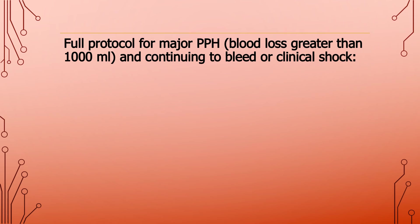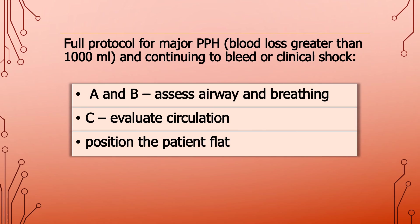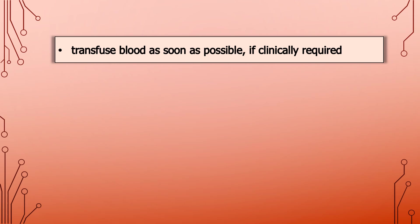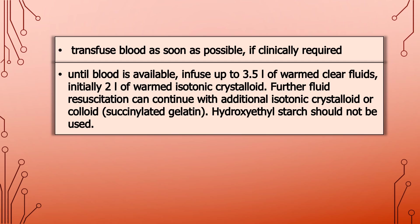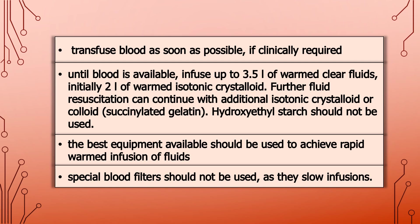Full protocol for major postpartum hemorrhage — blood loss greater than 1,000 milliliters and continuing to bleed or clinical shock: assess airway and breathing; evaluate circulation; position the patient flat; keep the woman warm using appropriate available measures; transfuse blood as soon as possible if clinically required. Until blood is available, infuse up to 3.5 liters of warmed clear fluids — initially 2 liters of warmed isotonic crystalloid, with further resuscitation using additional isotonic crystalloid or colloid such as succinylated gelatin. Hydroxyethyl starch should not be used. The best equipment available should be used to achieve rapid warmed infusion; special blood filters should not be used as they slow infusions.